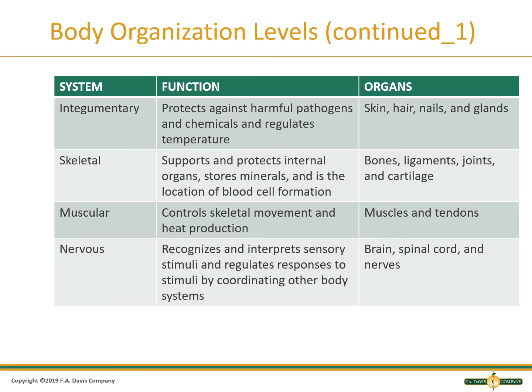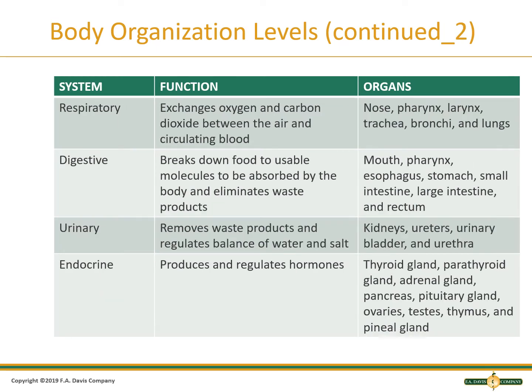The nervous system recognizes and interprets sensory stimuli and regulates responses by coordinating other body systems. Its organs include the brain, spinal cord, and nerves. The respiratory system functions in the exchange of oxygen and carbon dioxide between the air and circulating blood. Its organs include the nose, pharynx, larynx, trachea, bronchi, and lungs.